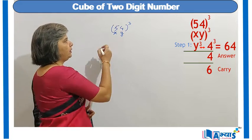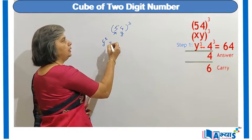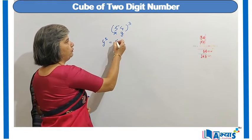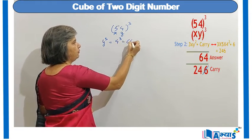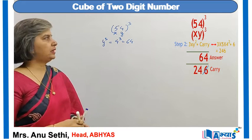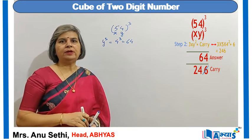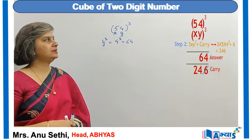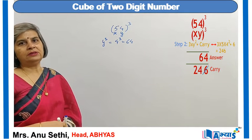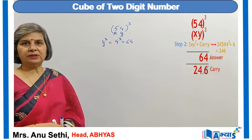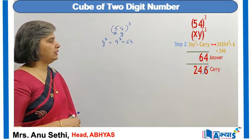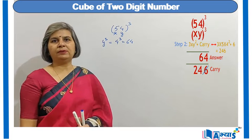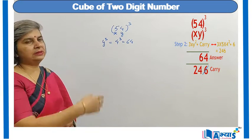The first step is to find the value of y cubed. Since y is 4, the cube of 4 is 64. The digit at the units place, that is 4, is prefixed in the answer, and 6 is considered as the carry.